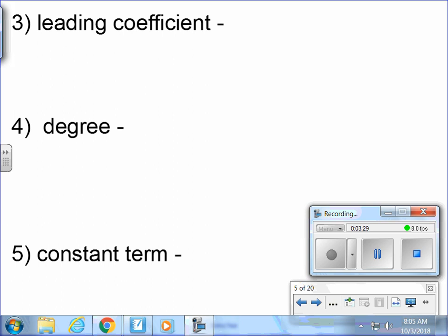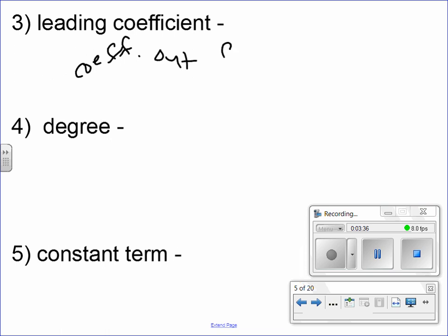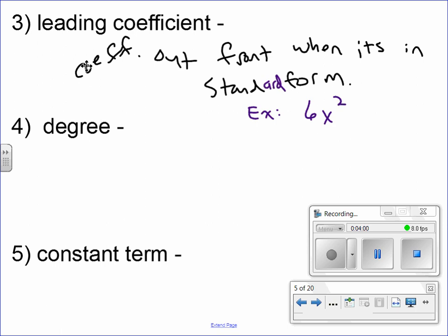So the leading coefficient is just the coefficient out front when it's written in standard form. Now you might be curious, what is standard form? Standard form is when they take the highest exponent and work their way down to the lowest exponent. So something in standard form would be 6x² - 8x + 1, because it has the highest exponent first, that's two, then x to the one, then x to the zero. That is standard form. If it's not in standard form, you want to put it in standard form before identifying the leading coefficient. And by the way, the six is our leading coefficient.